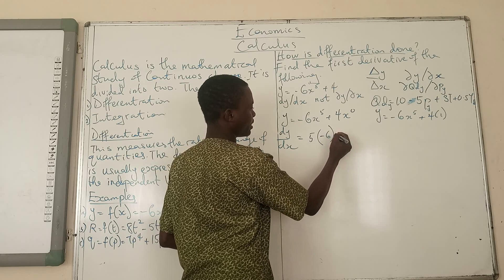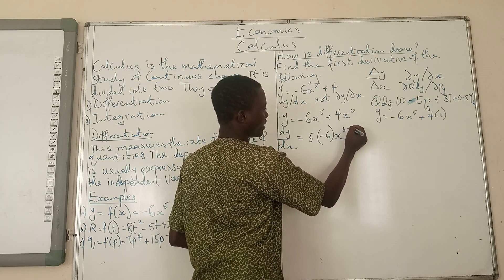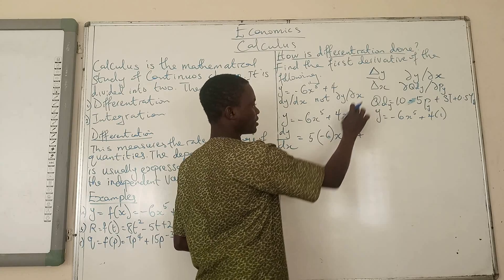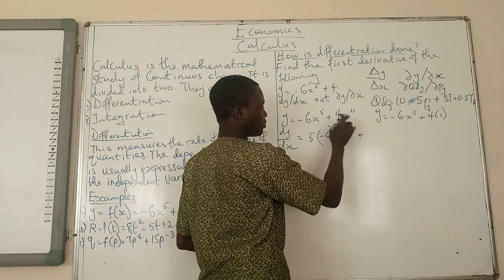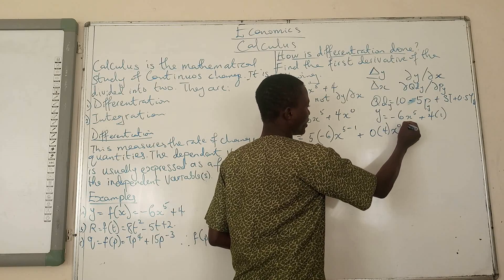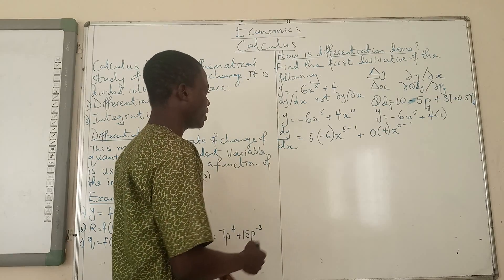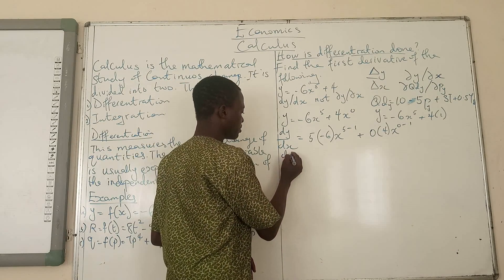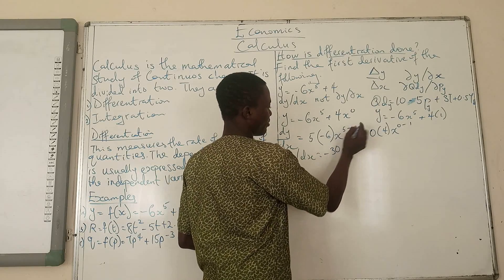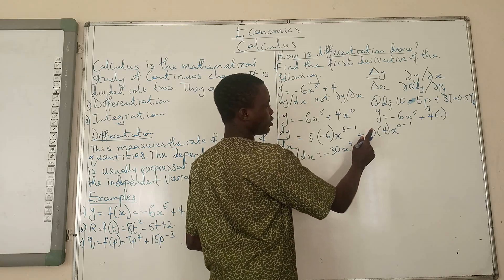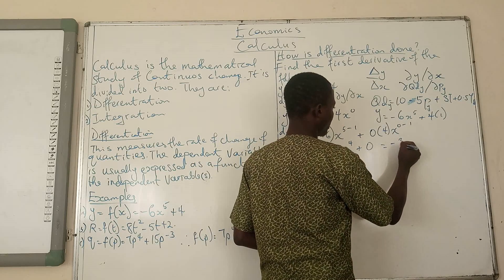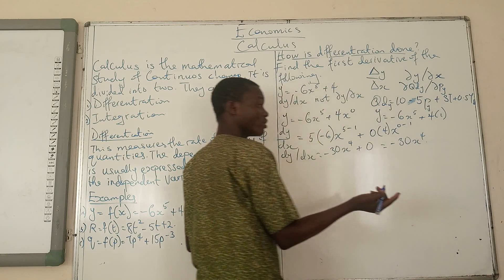So: 5 times minus 6, then x raised to power 5 minus 1. Then plus — the power of x here is 0 — so you make 0 multiply its coefficient, which is 4, then x raised to power 0 minus 1. So dy/dx equals: 5 times minus 6 is minus 30, x to the power 4. Then 0 times 4 is 0. Our final answer is minus 30x to the power 4. It's pretty much simple.